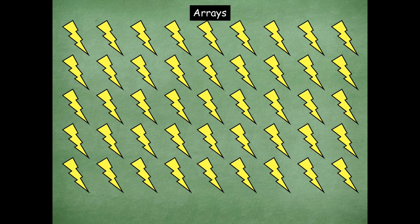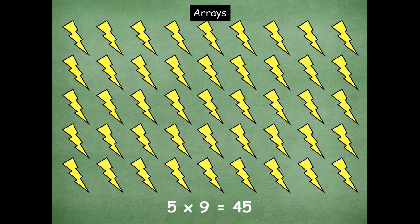All right, last one. Oh look at this — lightning bolts! Let's go lightning! So how many rows are there of these awesome lightning bolts? Five. How many are in each row? Nine. So what's our multiplication sentence? Yeah, five times nine. What does five times nine equal? What's the product? Forty-five. Five times nine equals forty-five is the multiplication sentence that matches this array.